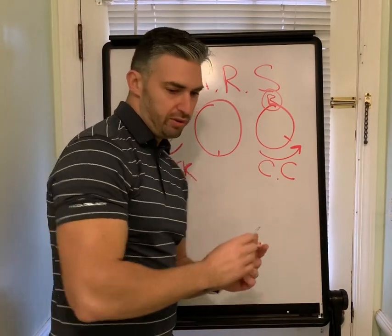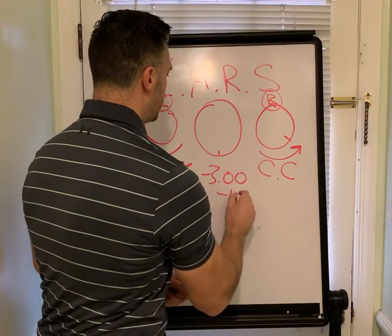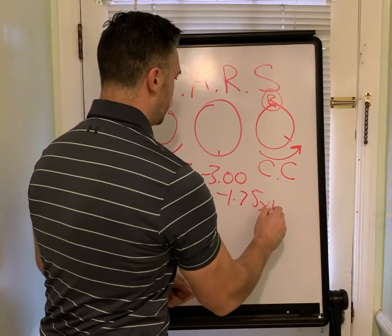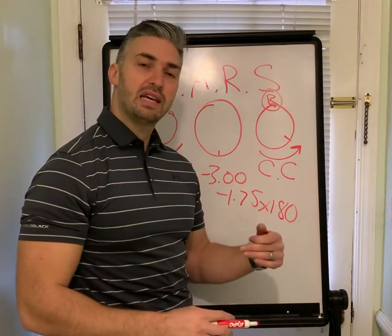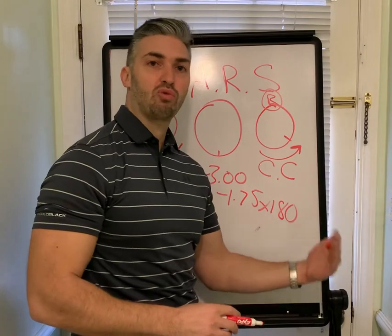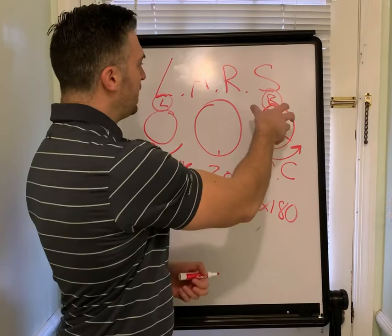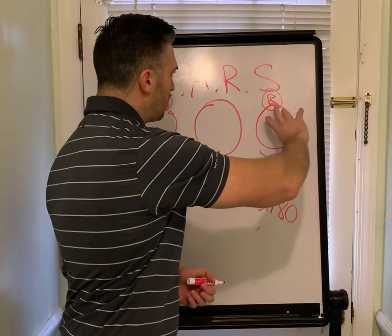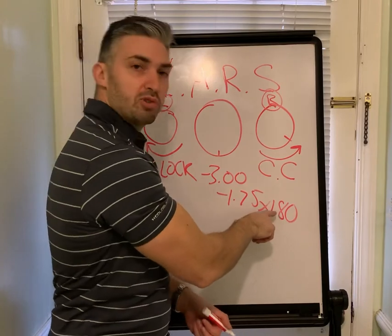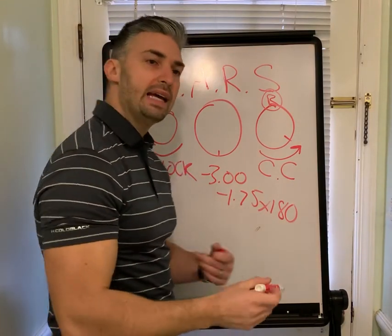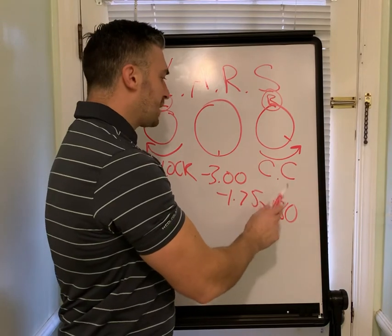We have one example: a minus three with minus 1.75 cylinder and axis 180. If upon observation this lens has rotated 20 degrees to the right, what should you prescribe? If it's moving to the right, that is counterclockwise, so we are subtracting from the axis. You subtract 20 degrees from 180, and you prescribe negative three, negative 1.75, axis 160.